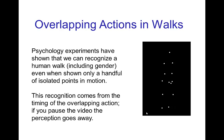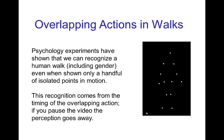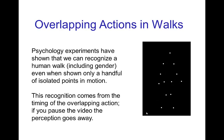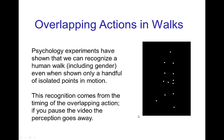We see this in a psychology experiment. You recognize a walk just from seeing the motion of not just the legs, but the hips, the shoulders, the arms, even the up and down motion of the head. If you pause it, it doesn't really look recognizably like a person walking — it just looks like a constellation of points.